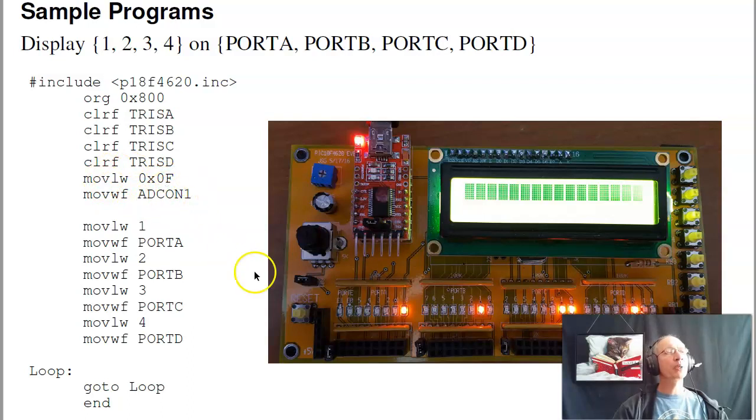Now to write the number 1, 2, 3, 4 to port A, B, C, D. I'll move 1 to W, move W to port A, move 2 to W, W to port B, 3 to W, W to port C, and so on. Everything goes through W. And a stop command, this is a stop command in assembly. I'm going to keep on going back to this line of code. It just keeps on spinning its wheel. It's basically stop.